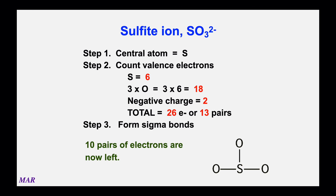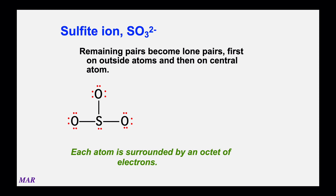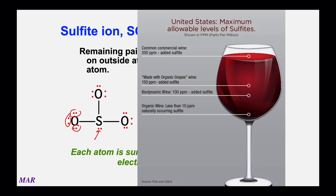With ten pairs remaining, we place lone pairs on the outer atoms first. We put three lone pairs around each of the three oxygens — that's nine pairs — leaving one pair for sulfur. Sulfur then gets one lone pair. Sulfur now has three bonding pairs plus one lone pair, giving it an octet. Each oxygen has three lone pairs and one bonding pair — also an octet. Everything here has an octet.